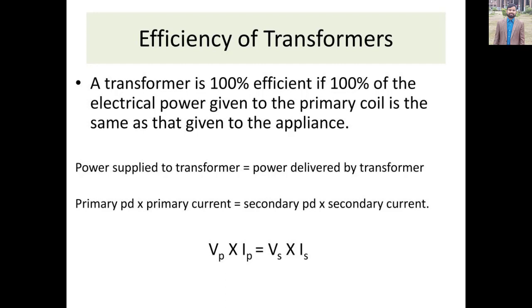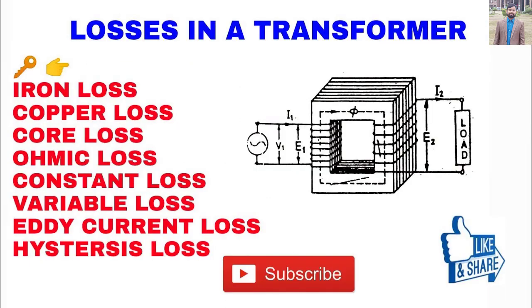An ideal transformer would have no losses and would therefore be 100% efficient. In practice, energy is dissipated due both to the resistance of the windings, known as load loss, and to magnetic effects primarily attributable to the core, known as iron loss.